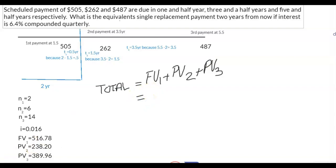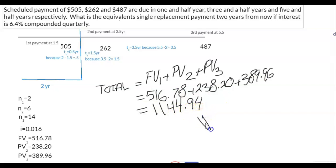So future value is 516.78. Your present values, or the money moving back, are 238 dollars and 20 cents and 389 dollars and 96 cents. Add them all together. It gives you 1,144 dollars and 94 cents. This is your final answer. This is your single equivalent payment.